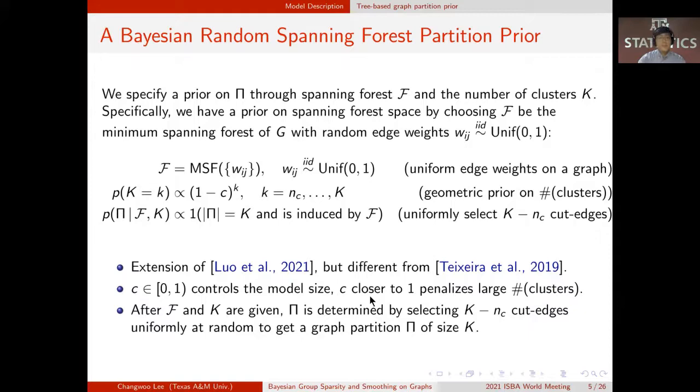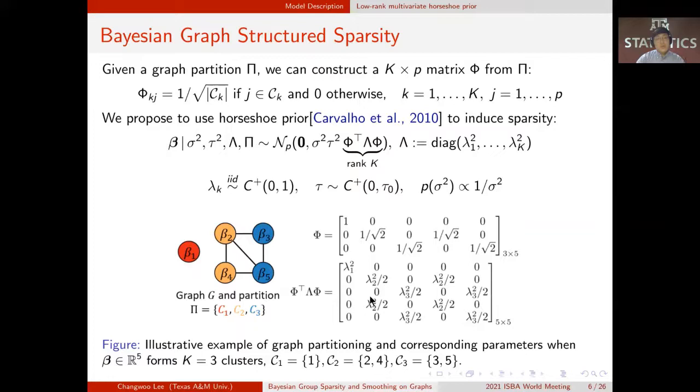Now we have completed the prior specification on graph partition to get homogeneity, and we have left with sparsity. Given pi, we can construct K by p matrix phi. Phi has mutually orthonormal rows, as you can see in the example here, and multiplication with phi represents the projection towards row space.